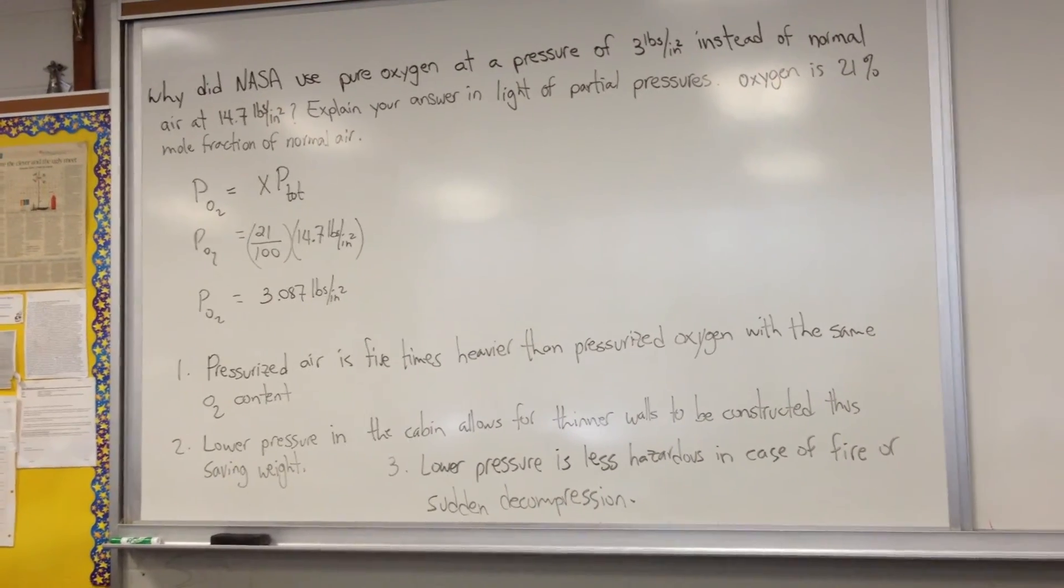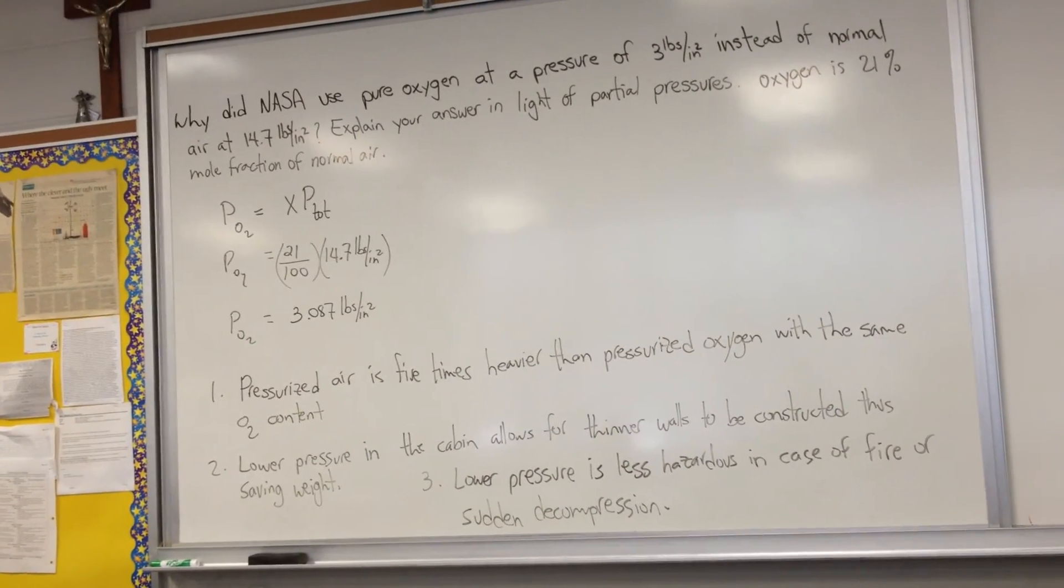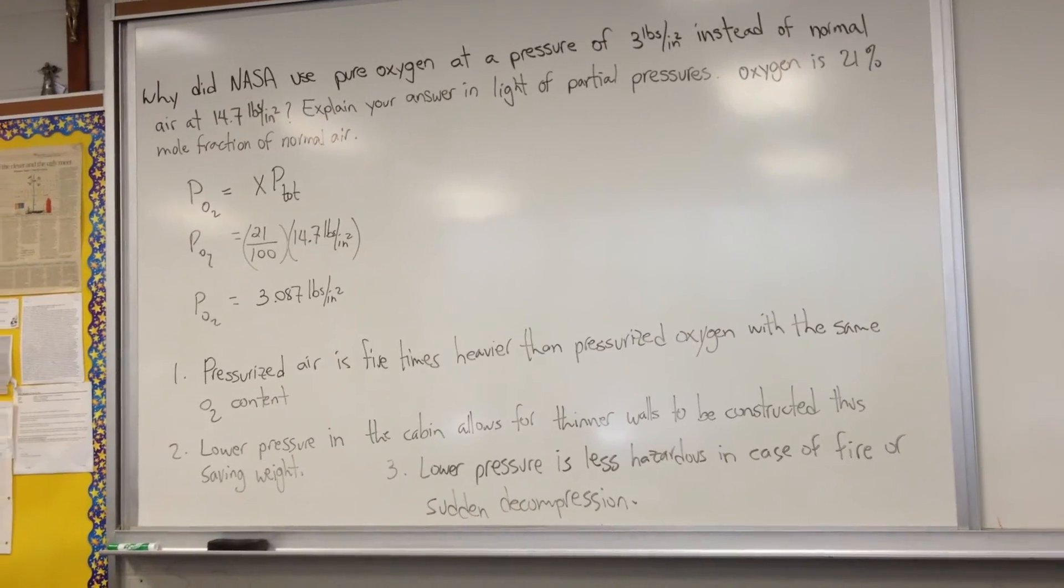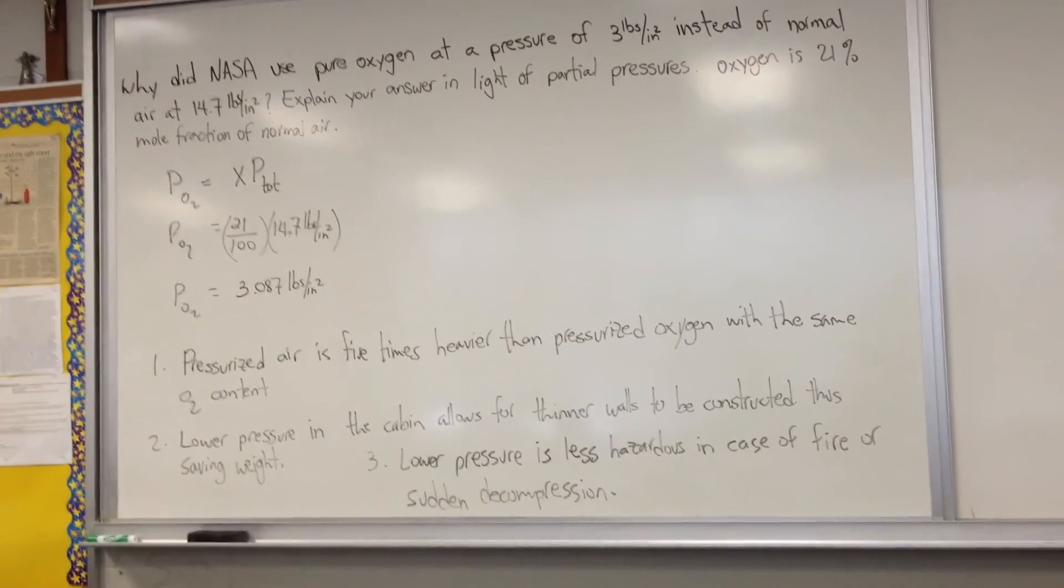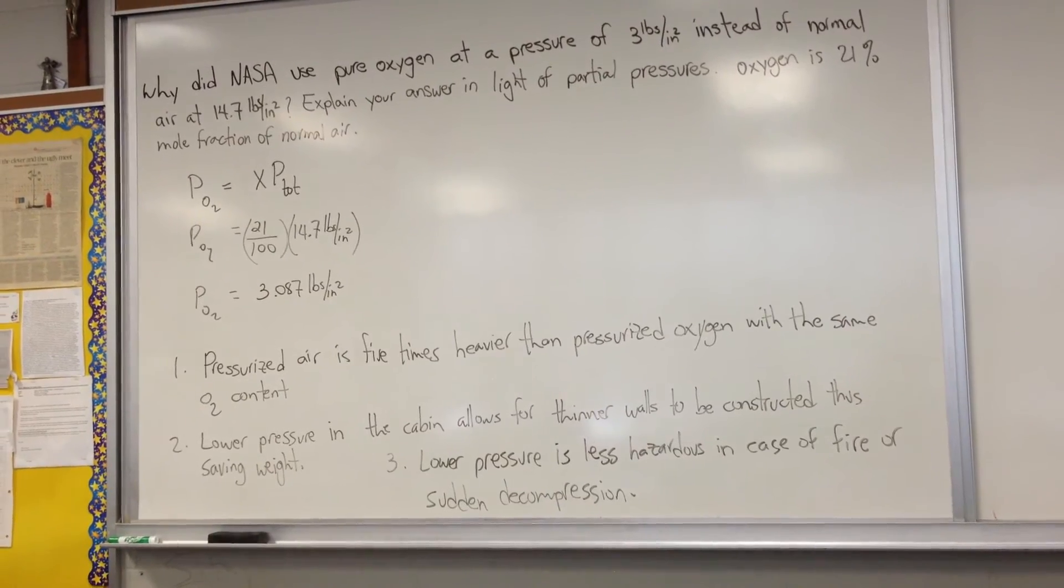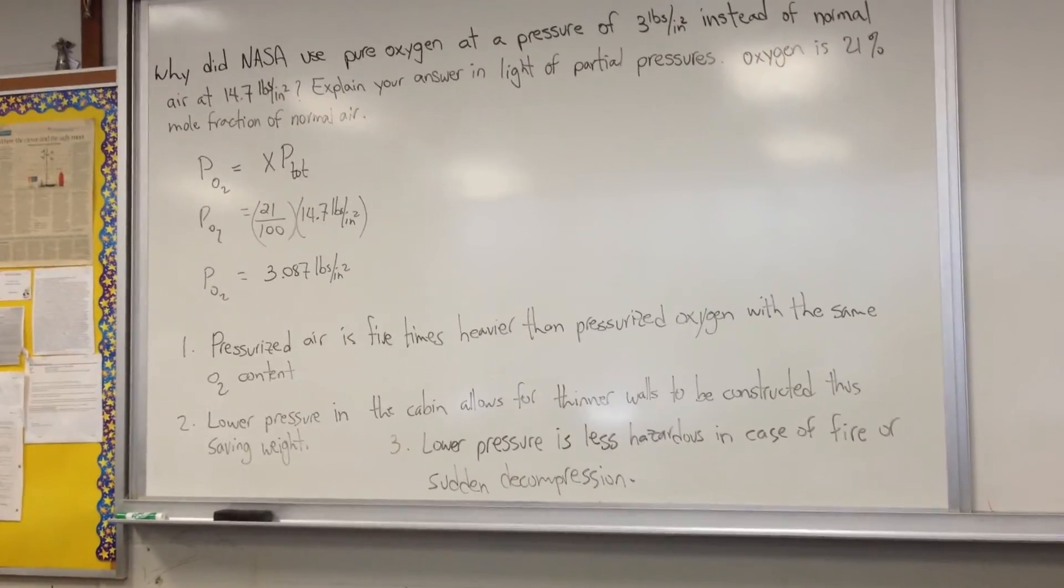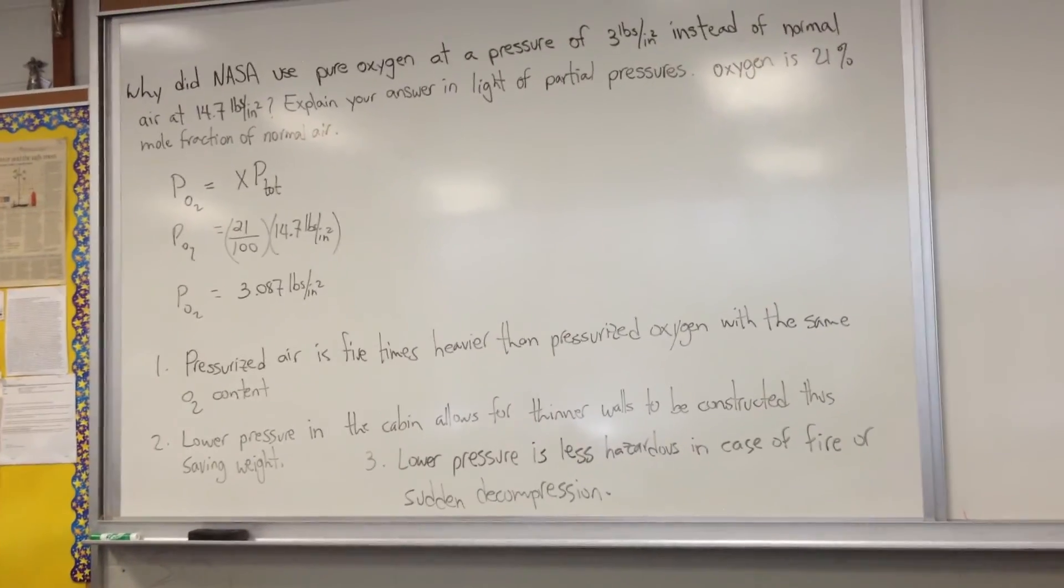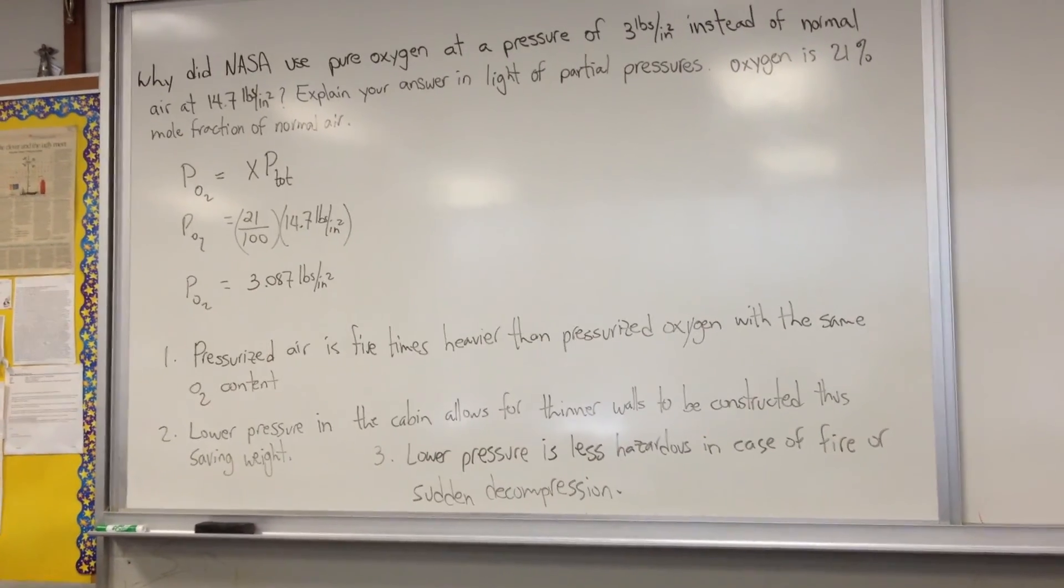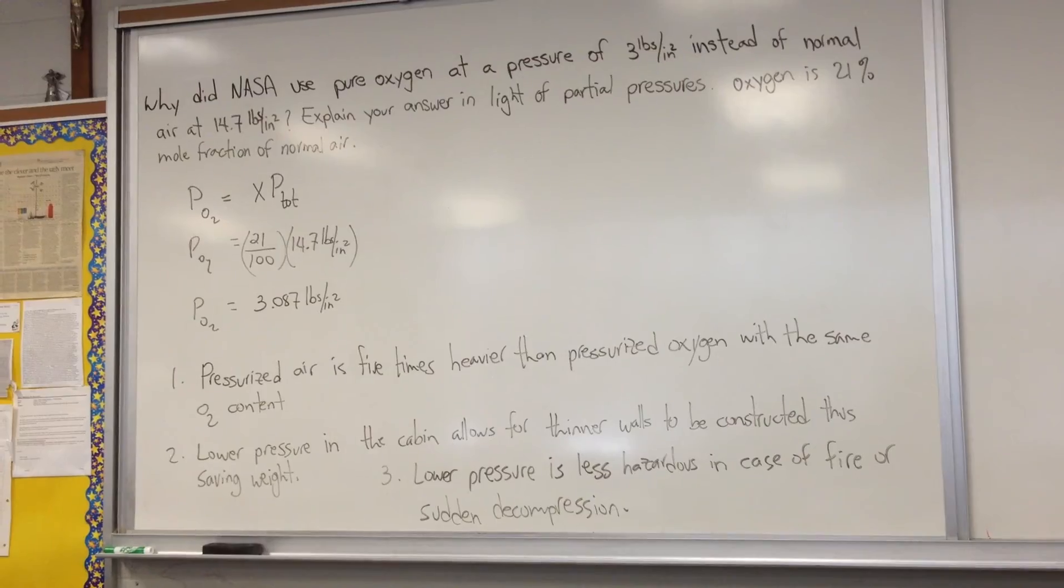A sudden decompression from 14.7 pounds per square inch to the vacuum of space could easily cause damage to the astronauts. Whereas a sudden decompression from only 3 pounds per square inch to 0 pounds per square inch still wouldn't be a pleasant occurrence, but it would constitute a less dangerous decompression and one that is more survivable, provided they have their helmets on.